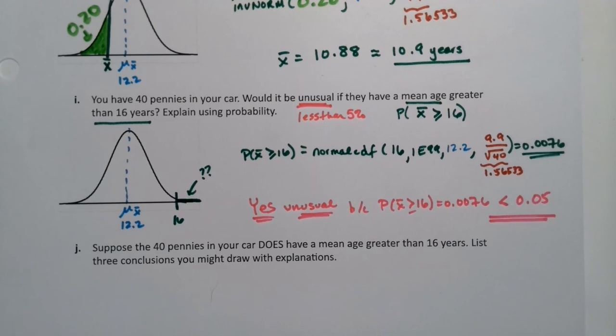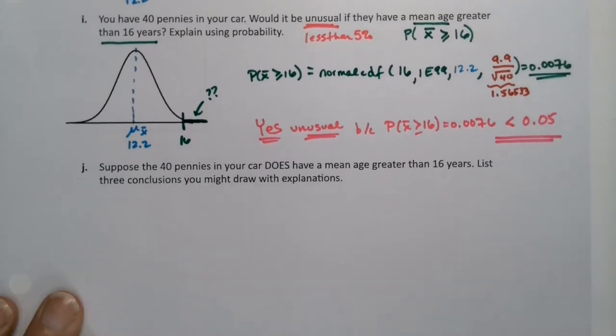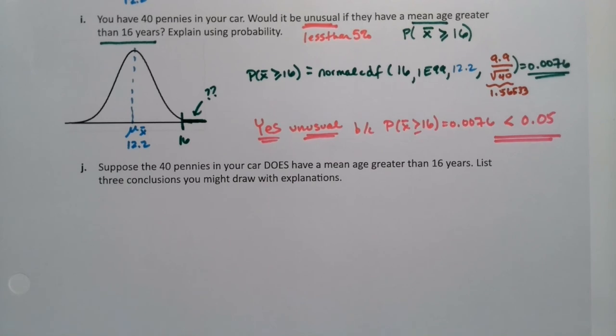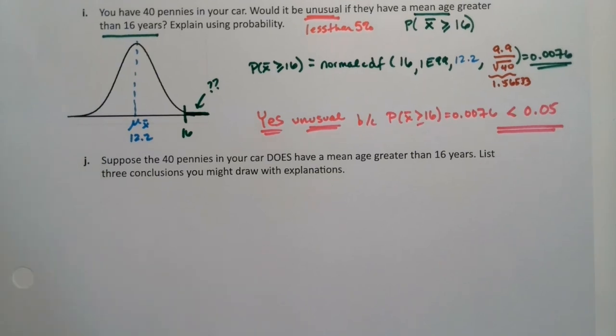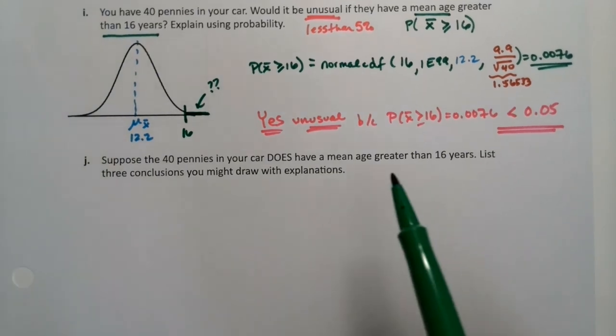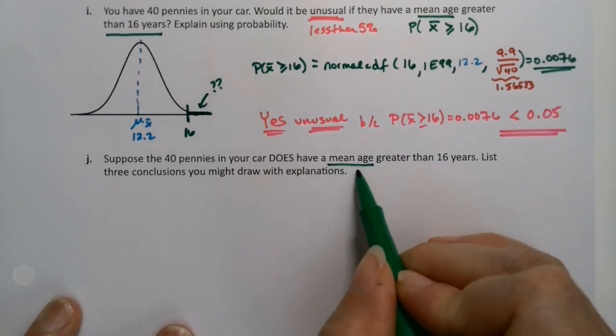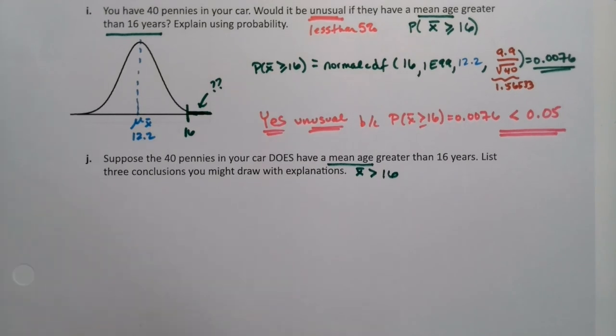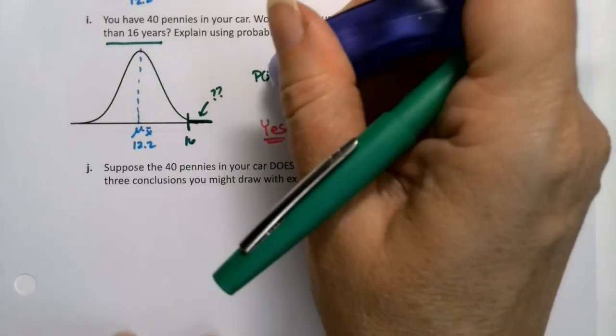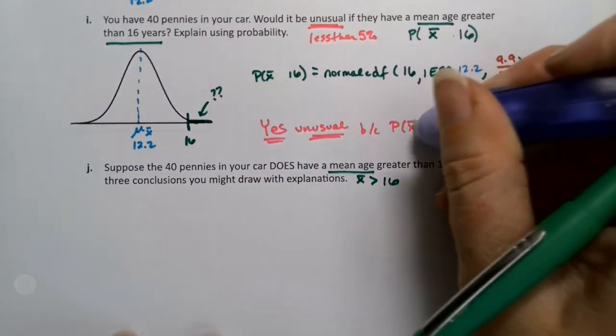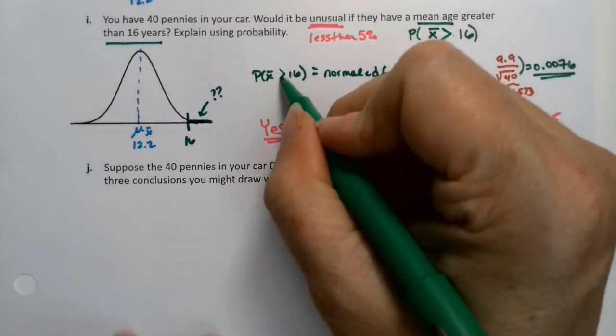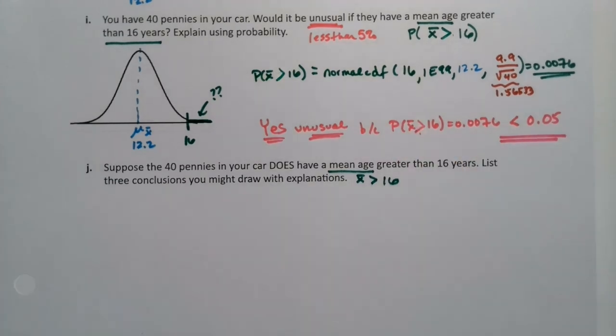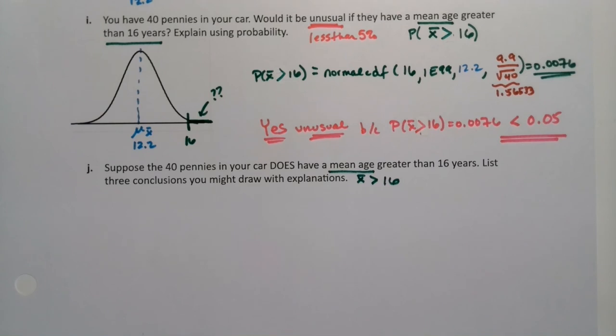Okay. Now this is going to lead us into chapter 10. So pay very close attention. Suppose it happens. Suppose you reach in your car, among your car cushions, and you do in fact find 40 pennies that have an average age, an X bar, greater than 16. What are three conclusions you could draw from this?